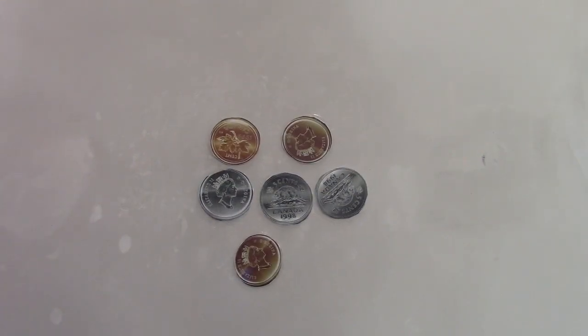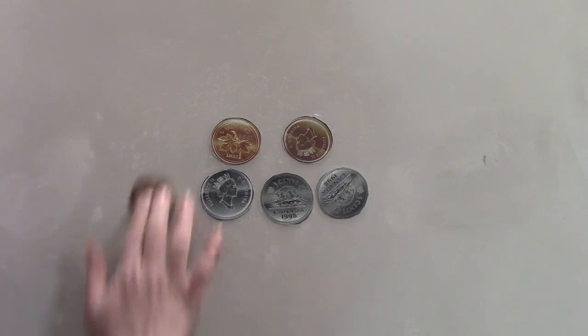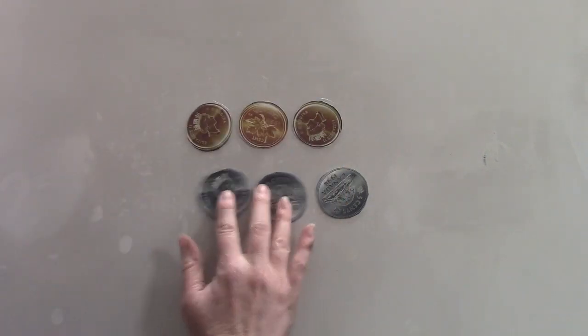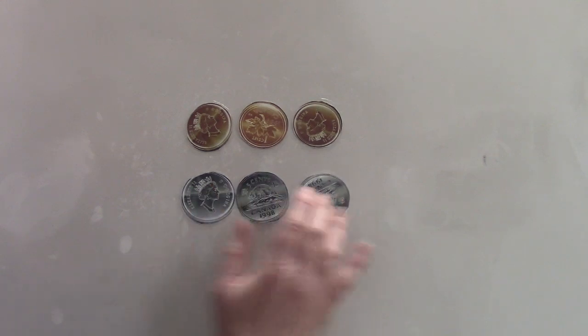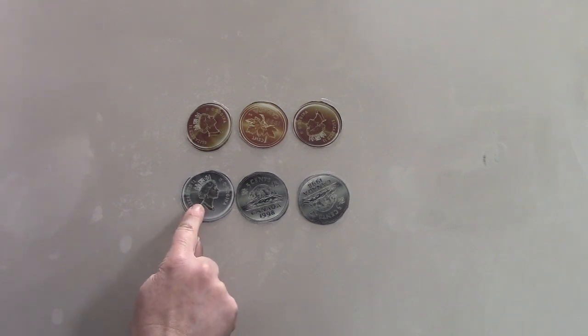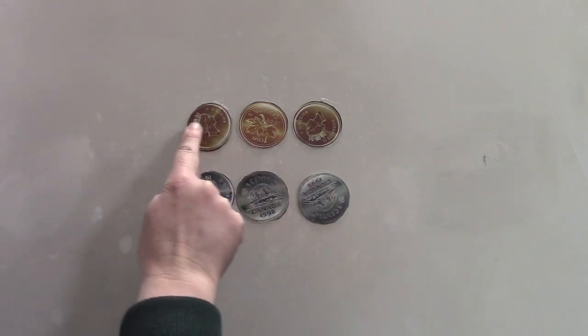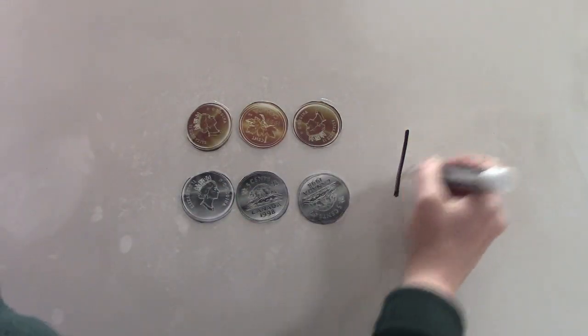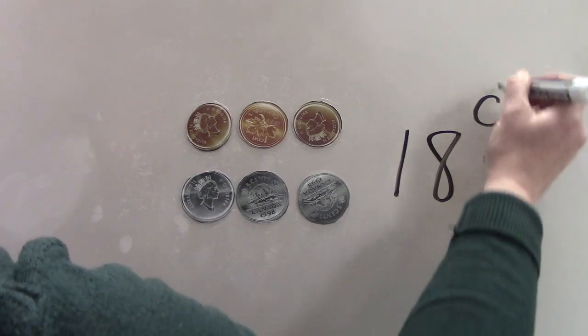I have some more coins here. So we're going to count these as well. The first thing that we do when we're counting coins is we separate them into groups of like coins. And then we start with the largest amount first. And so our nickels are five cents. So we'll count those first because our pennies are only worth one cent. Five, 10, 15, 16, 17, 18. We have 18 cents.